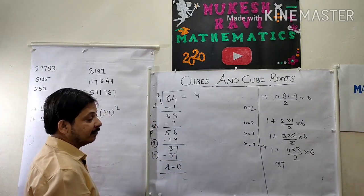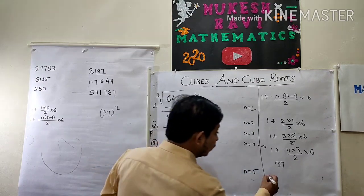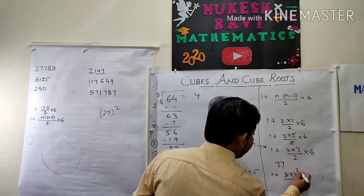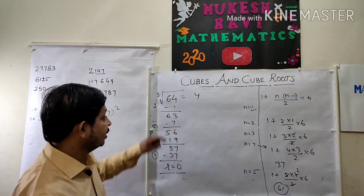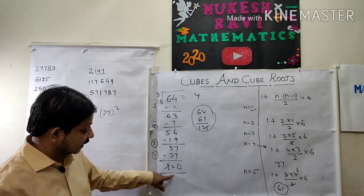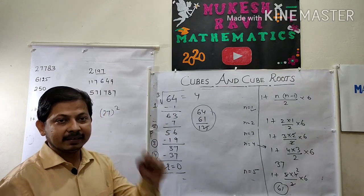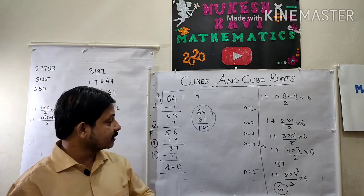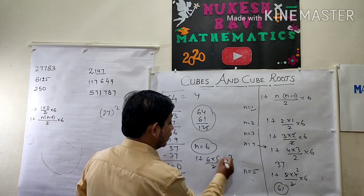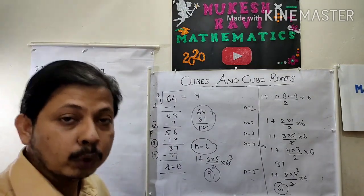Similarly for 125: continuing from where 64 gave remainder 0 at step 4, at step 5 (n=5): subtract 1 + 5×4/2 × 6 = 61. Adding previous result 64 + 61 = 125. Remainder becomes 0 at step 5, so the cube root of 125 is 5. For 216 at step 6 (n=6): subtract 1 + 6×5/2 × 6 = 91. The cube root of 216 is 6. The number of steps to reach remainder 0 is your answer.